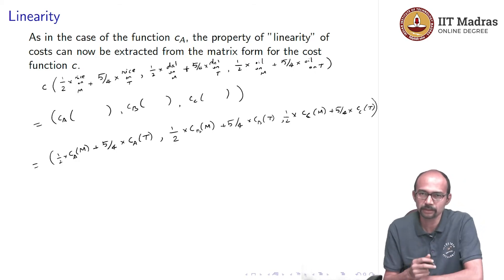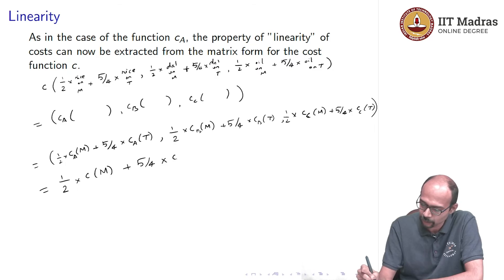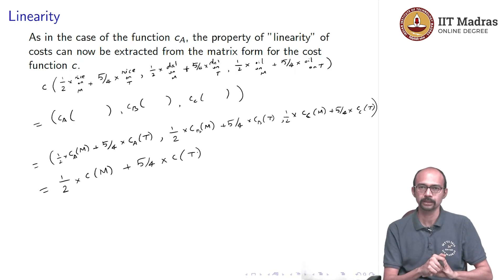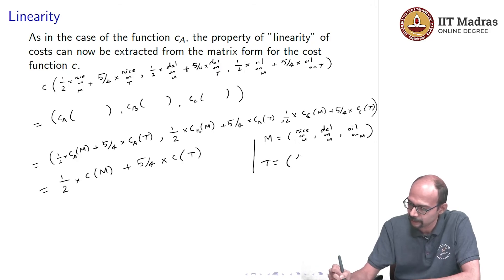And so, I can effectively compute this by computing everything on Monday and Tuesday, but it gets even better because we know how to do matrix, we know how to add and subtract and scalar multiply things in R3. So, because we can do that, we can write this even better as half times the cost vector evaluated on the commodities for Monday plus 5/4 times the cost vector evaluated on the vector for Tuesday. I can separate these into two different vectors and then I can pull out the scalars. So, I will encourage you to do that. Just in case it was confusing what is M, by M I meant rice on Monday, dal on Monday, oil on Monday. And by T I meant rice on Tuesday, dal on Tuesday, oil on Tuesday.